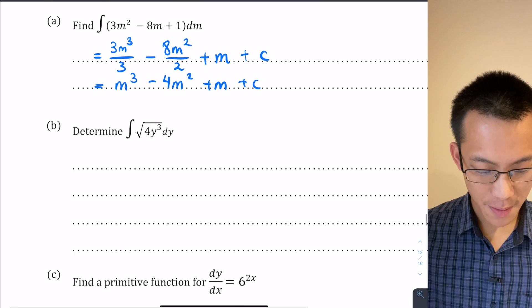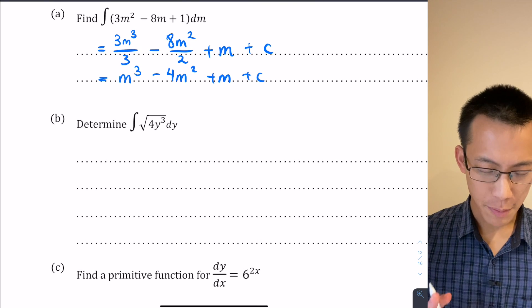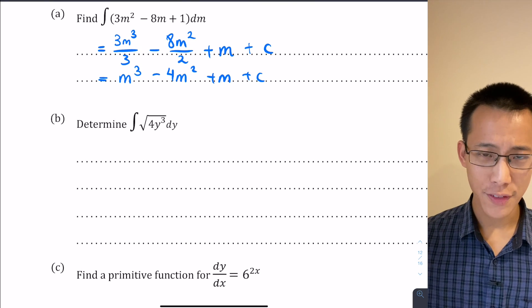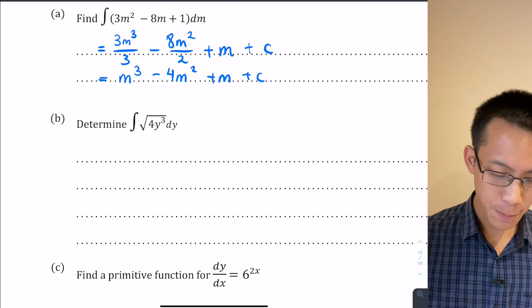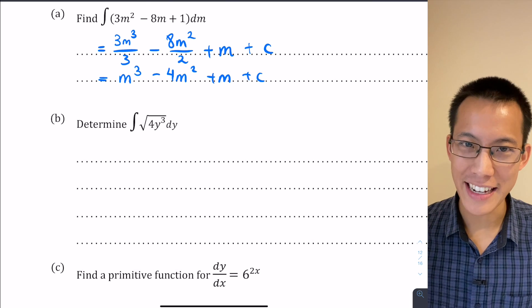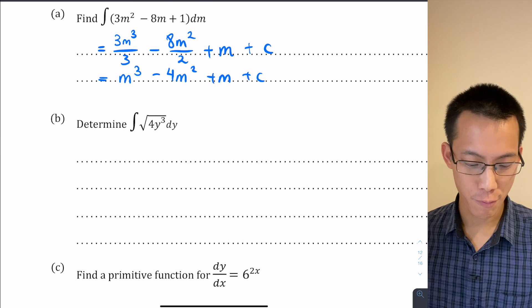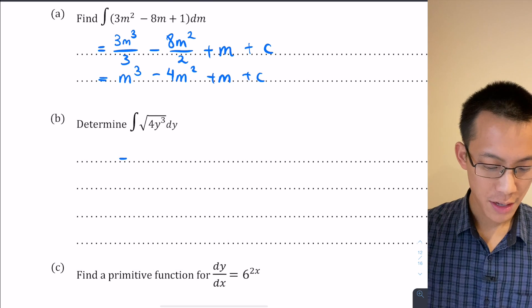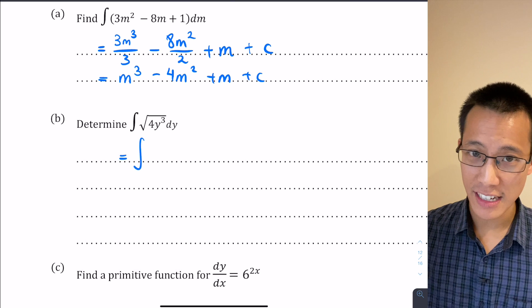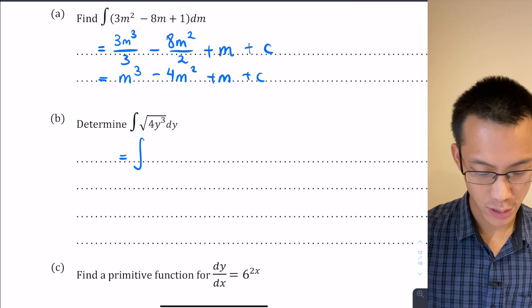Now when we're determining this particular integral, like we saw before with our negative indices and our fractions, this particular integral is not written so it's set up to make integration easy. You have to manipulate it a little bit and then go for the rules that you know how to use. So I'm going to write this completely in index form without any square root signs in it.